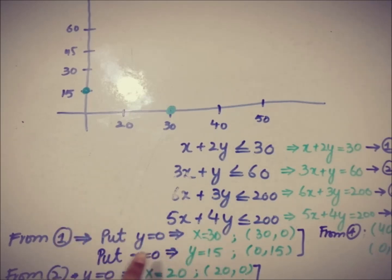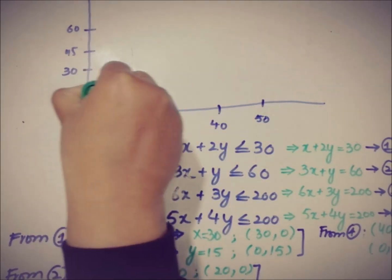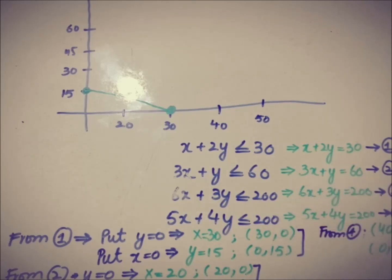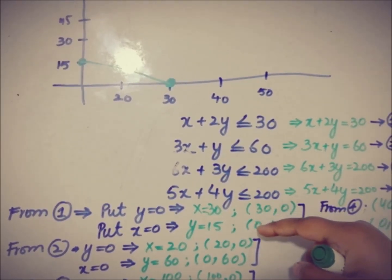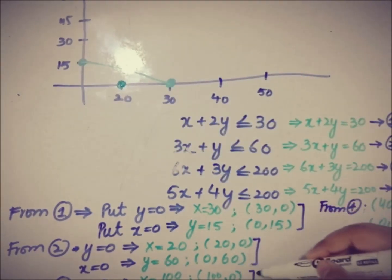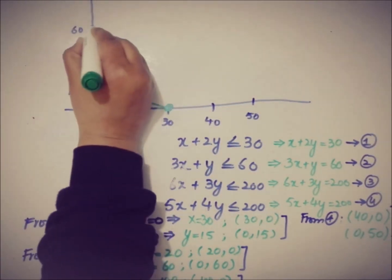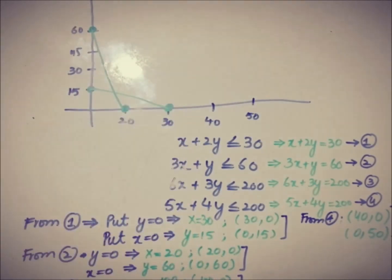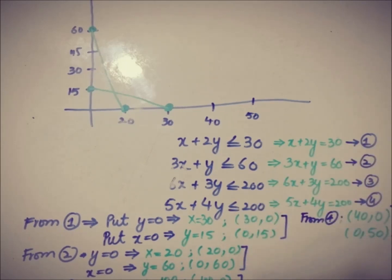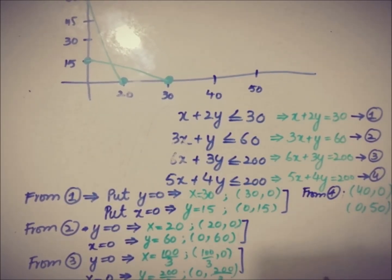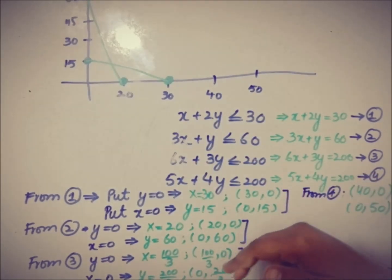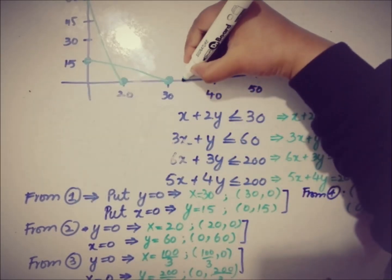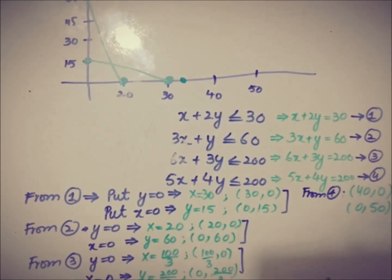Since both points (30, 0) and (0, 15) are from the first constraint, I join them with a line. Moving to the second pair from the second constraint, we have (20, 0), which is this point, and (0, 60), which is this point — so I join those. Moving to the third pair from the third constraint, we have 100/3, approximately 33.3, and 200/3, which is approximately 66.67.